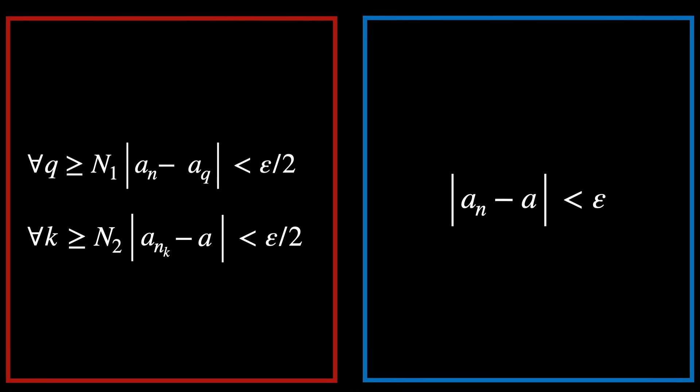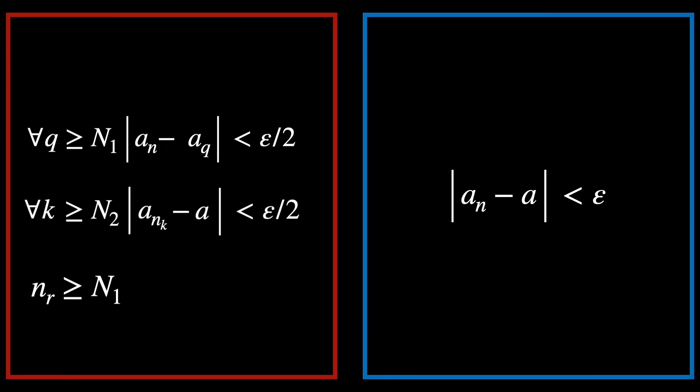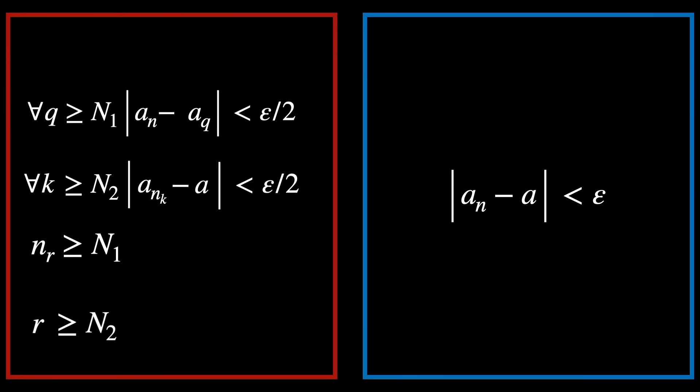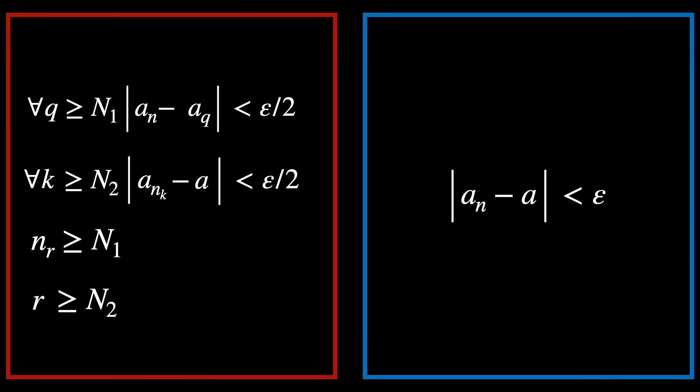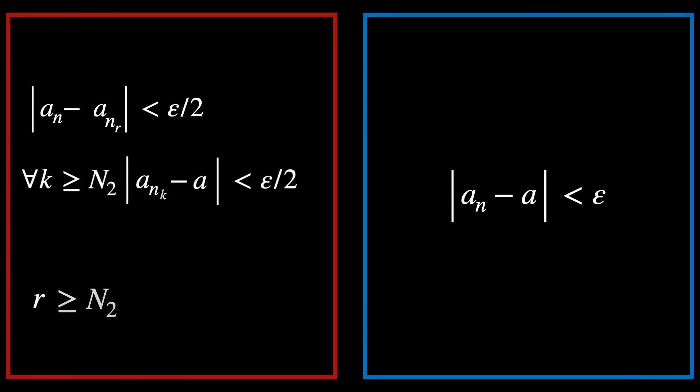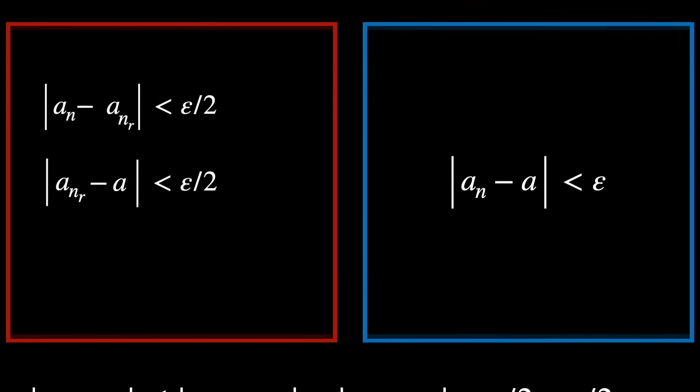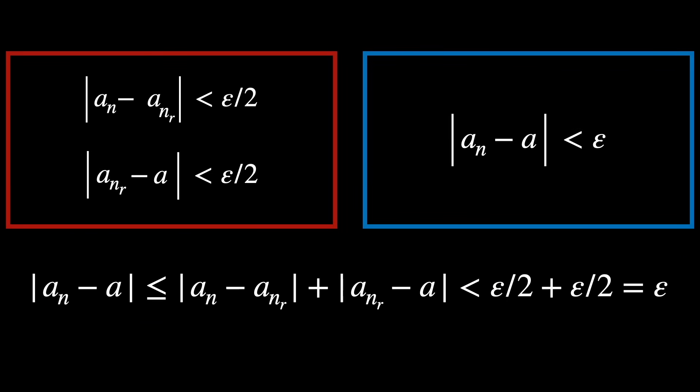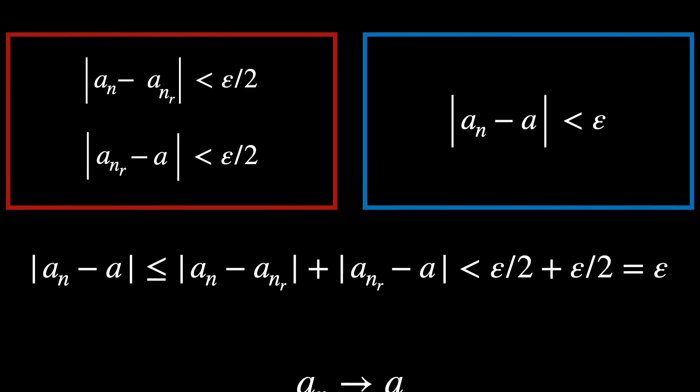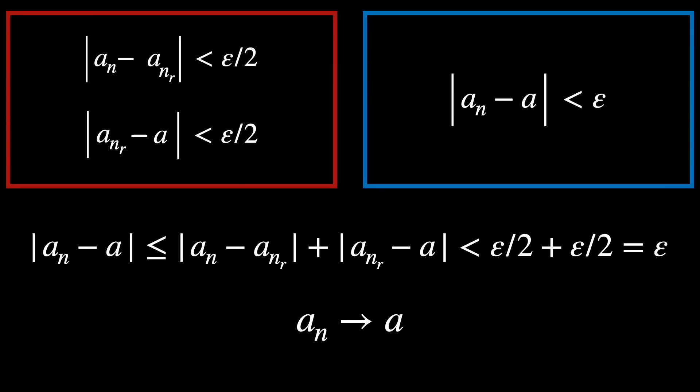We're going to use r to denote the k and write down the conditions r should satisfy. Okay, let's move n sub r into the first hypothesis and r into the second hypothesis. And now we are done by the triangle inequality, which is a classic trick. So the sequence a_n tends to a, which proves that the original sequence converges.